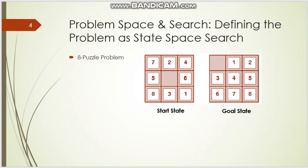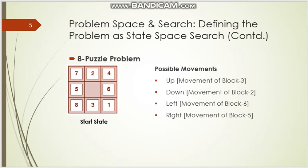To solve this, it is important to define the specific state space search where you can find the goal. The possible movements are four: up, down, left, and right. In the start state, as the middle block is empty, four patterns of steps can be taken.